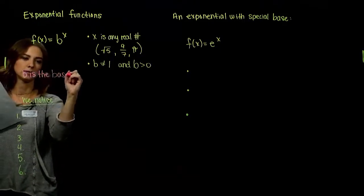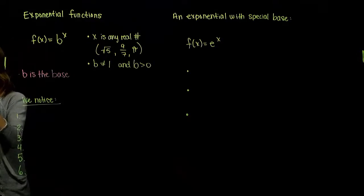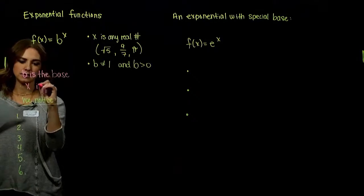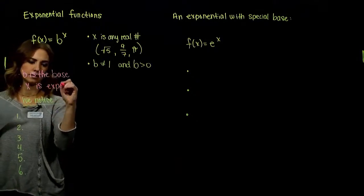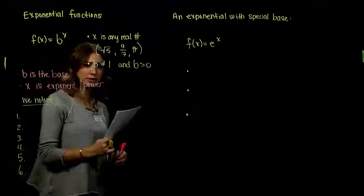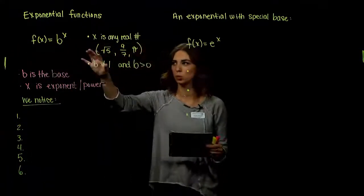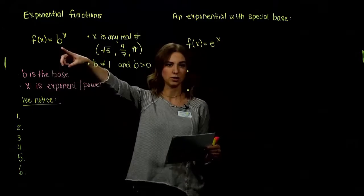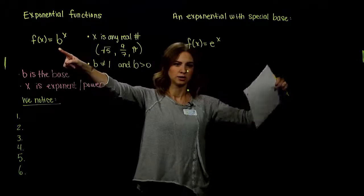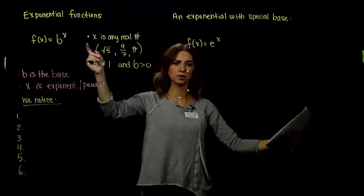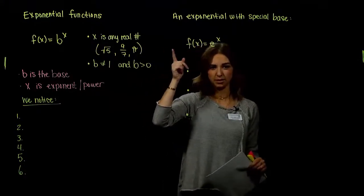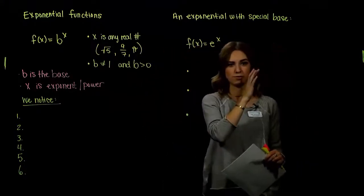We call b the base and x the exponent or the power — we use those interchangeably. With polynomials, the variable was in the base position, like x raised to some power. But with exponential functions, the variable x is up in the exponent position, which tells us about the growth of the function.